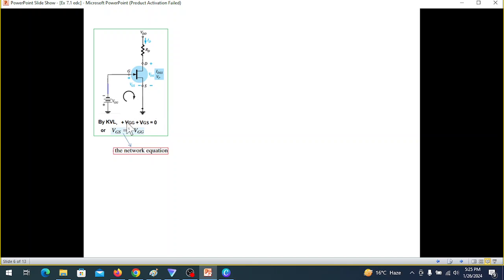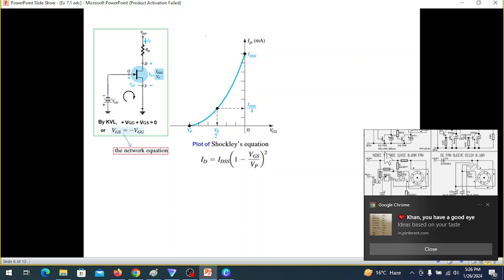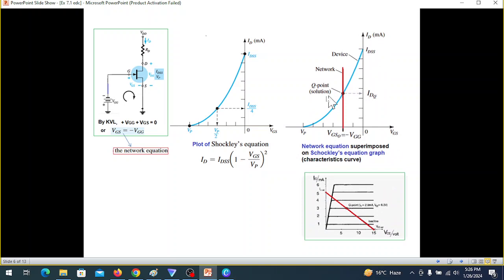From this circuit we found the relation VGS equals minus VGG. This is called the network equation, and this is the transconductance equation, the characteristics of the JFET. If we superimpose this value on this, we can find the Q point. Like in case of transistor, these are the characteristics curves, we draw the load line and find the Q point. Same here, this was the transconductance curve. On this we plotted the network equation VGS equals minus VGG, and so we find the Q point: this is IDQ and this point will be VGSQ.